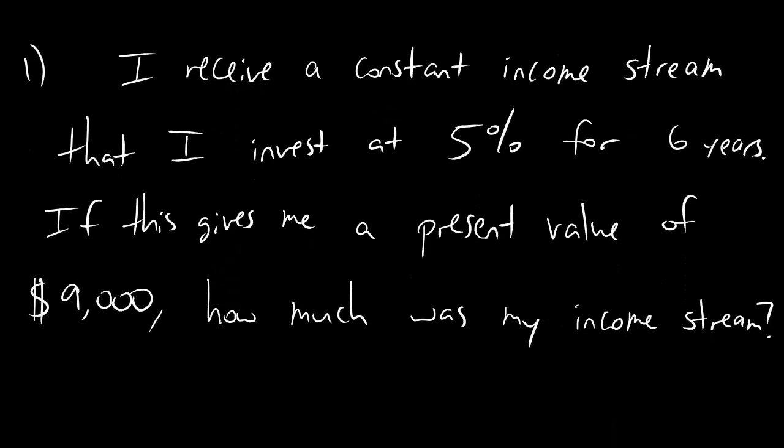Let's say I receive a constant income stream that I invest at 5% for 6 years. This gives me a present value of $9,000, and the question is, how much was my income stream?